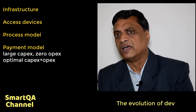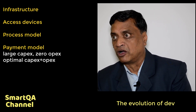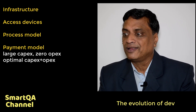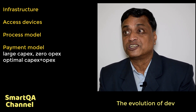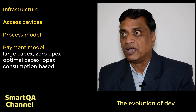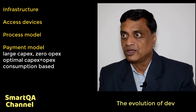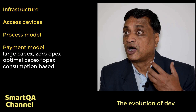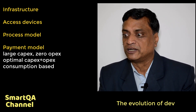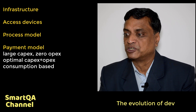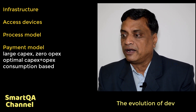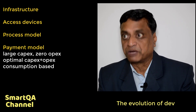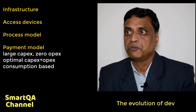Then they went into another model where there is less capex but more opex — they started renting out the machines from outside. After that, a consumption-based volumetric model evolved, where you buy the product and depending on the number of users and the amount of utilization those users had, you get charged. That became the consumption-based volumetric model. And the last one, which is becoming predominant now, is pay-per-use.